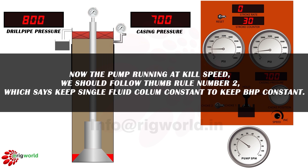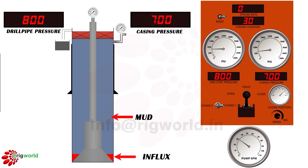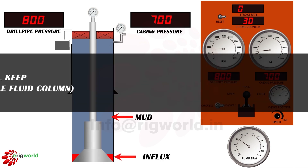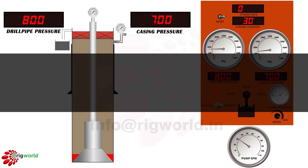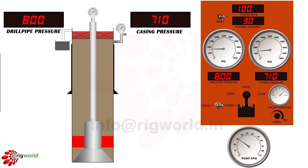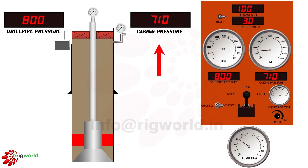Now the pump is running at kill speed — we should follow thumb rule number two, which says keep the single fluid column constant to keep BHP constant. The annulus has two fluids — influx and mud — whereas the drill pipe has a single fluid and we are pumping the same fluid. Until influx is circulated out, we will keep drill pipe pressure constant equal to ICP (single fluid column). Step 2: at 100 strokes pumped, keeping ICP constant in the drill pipe, what will happen to casing pressure?